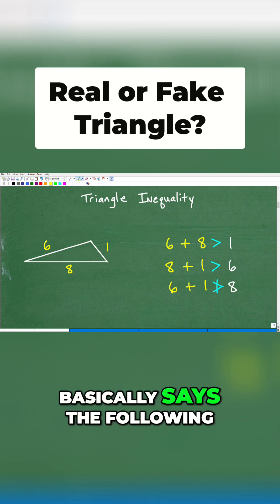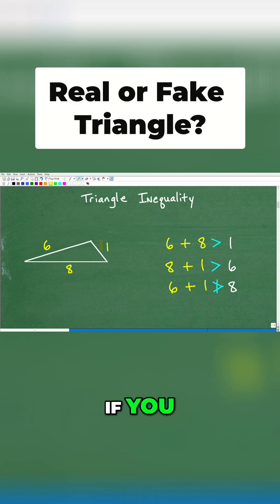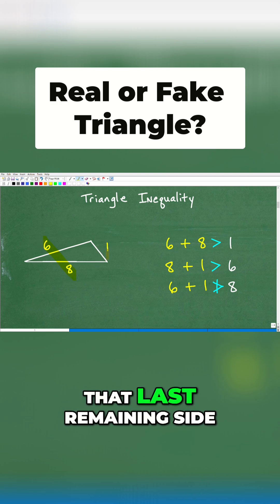A triangle inequality basically says the following. If you have three sides of a triangle, any two sides that we add up, so let's take six and eight, any two sides, the sum of any two sides has to always be greater than that last remaining side.